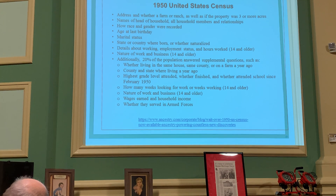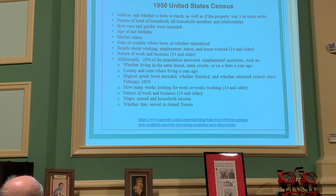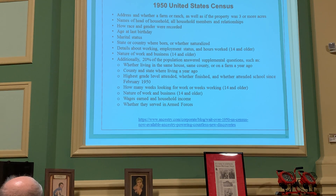This slide tells us what's in the 1950 census: address, head of household, and all the people in the household and their relationship to the head of household, race, gender, age at their last birthday, marital status, state or country where they were born, details about what they did and what industry they worked for. There are also supplemental questions that not everyone had to answer — whether they lived in the same house the year before, highest grade level of education, how many hours they worked the week before, and whether they were in the armed services.